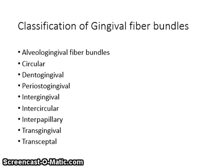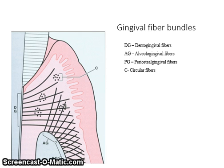Classification of gingival fiber bundles: they are classified as alveolo-gingival, among others. The fiber bundles are known as the gingival ligament. Their functions include protecting and supporting the junctional epithelium, maintaining the tone of the attached gingiva, and protecting the PDL. There are five principal fiber groups and six minor groups. Although some fibers intertwine, all bundles are discrete and independent, providing coronal connective tissue attachment for the teeth.